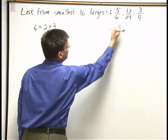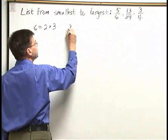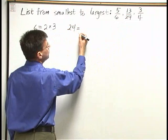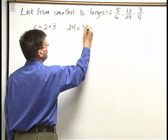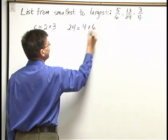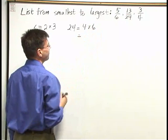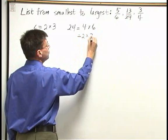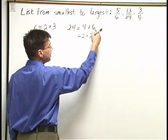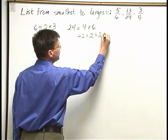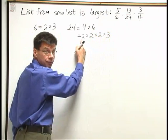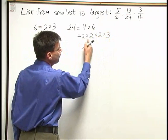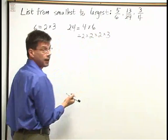My next denominator is 24. Let's take 24. I can factor 24 into 4 times 6. 4 I can factor as 2 times 2, times 6 I can break down into 2 times 3. Now I have 2 times 2 times 2 times 3. I have all prime numbers, so I'm done factoring 24.